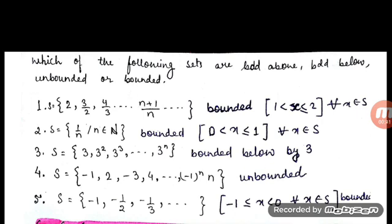The first question: S is a given set with elements 2, 3/2, 4/3, and so on, which is of the form (n+1)/n. If we look at the first element, it is 2. Finding the value of each term till infinity, the maximum value is 2. If we try to find the minimum value, n+1 upon n approaches 1.